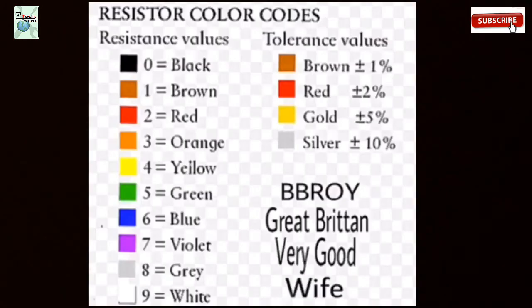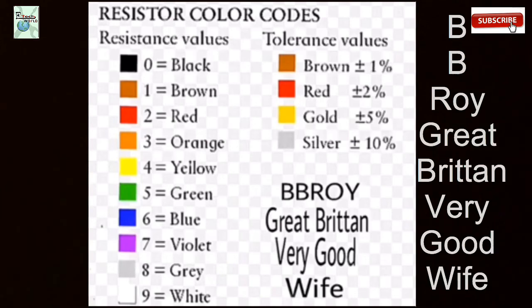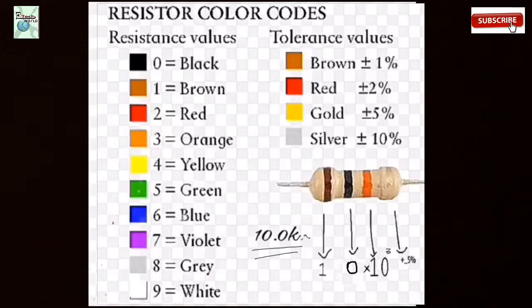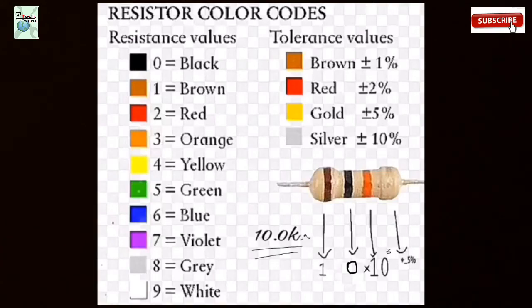We can easily memorize the color coding by using the short form: BB Roy Great Britain Very Good Wife. Here I'll show you one resistor so we can find the value of the resistor easily in this method. For the first one,